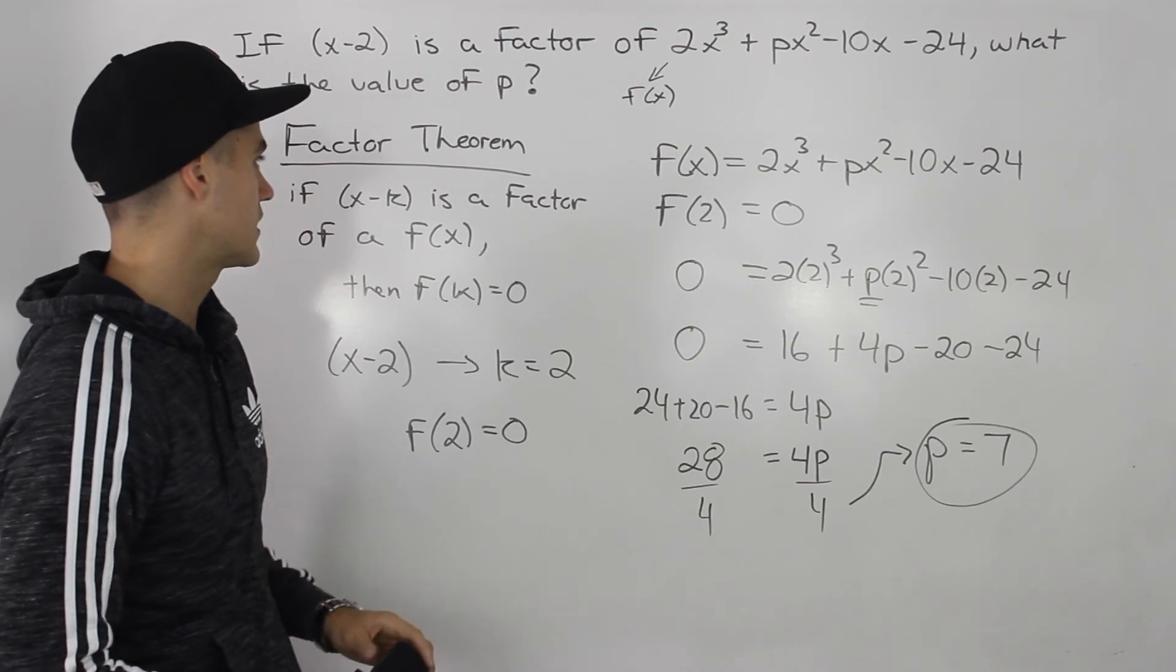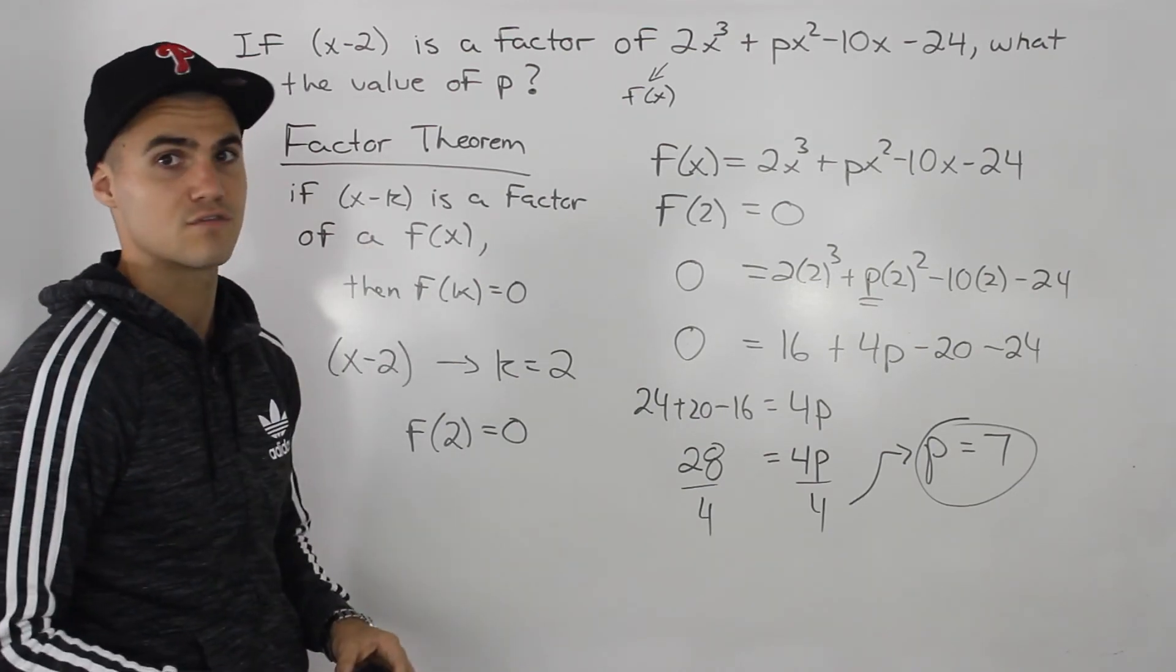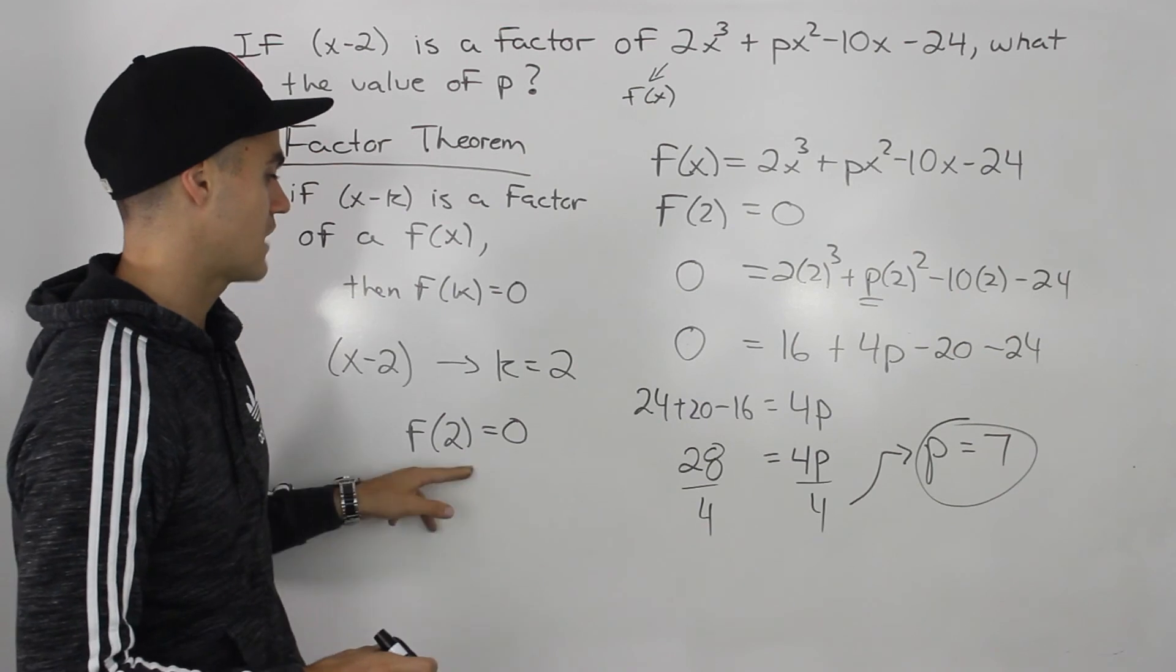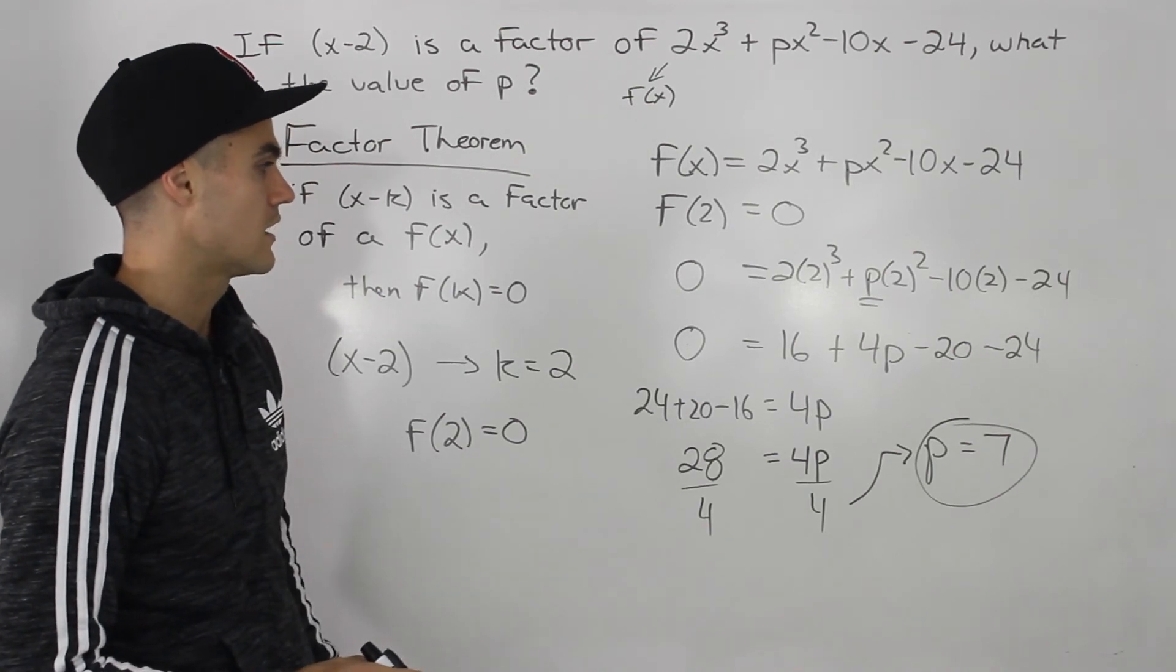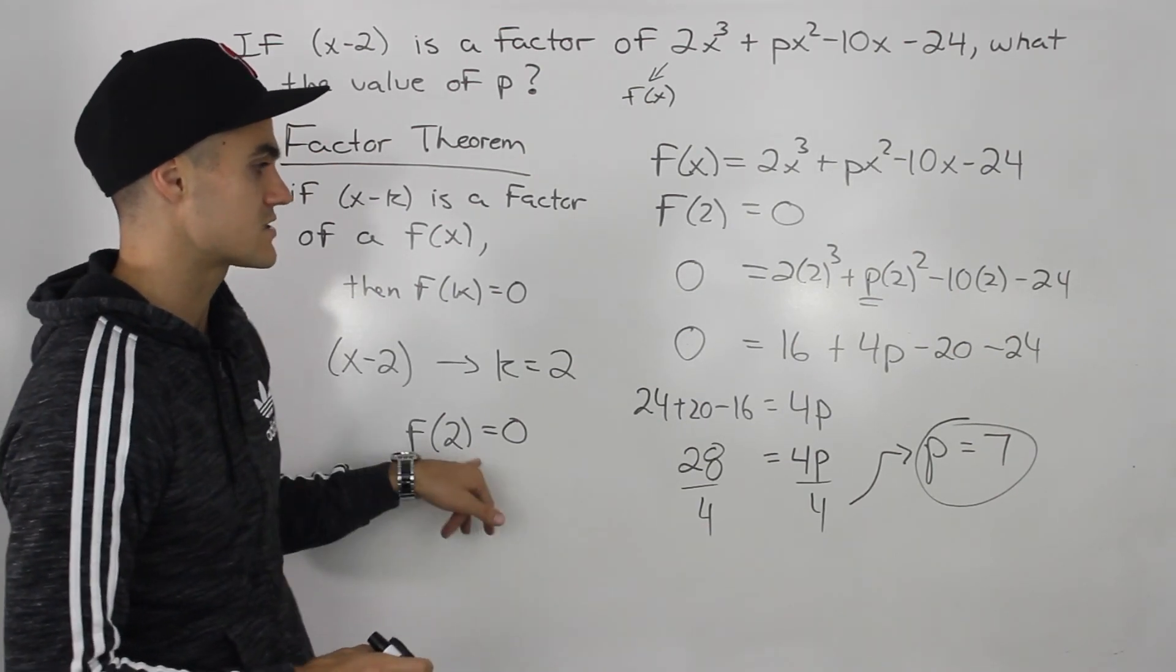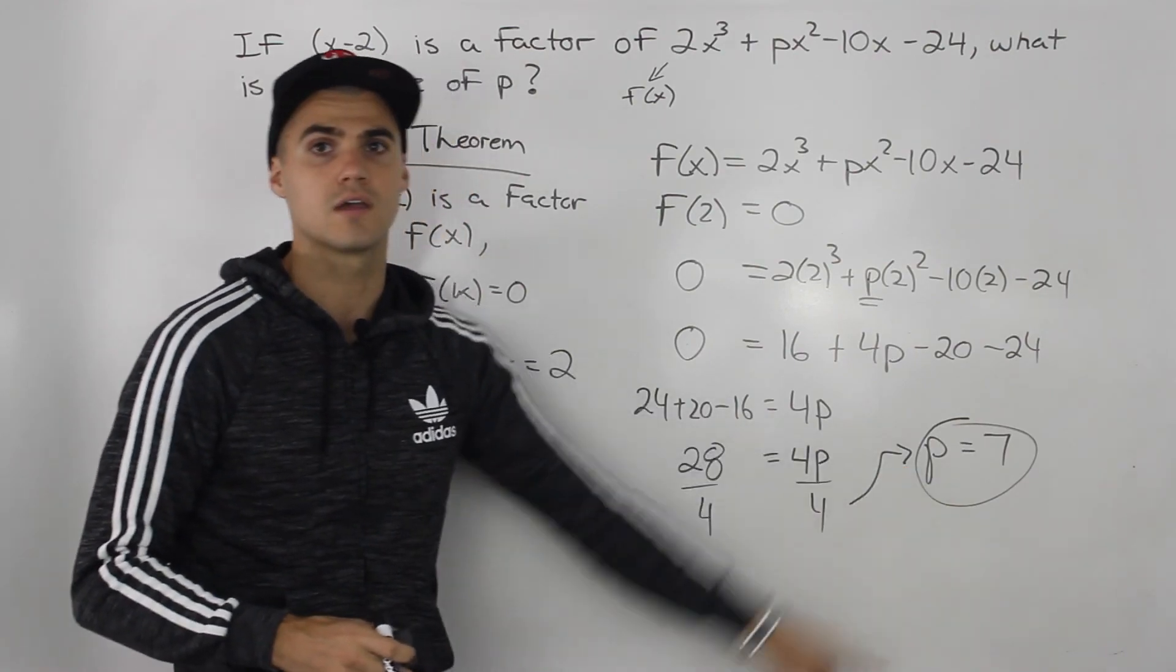And you should, because x minus 2 is a factor. So according to the factor theorem, f of 2 should equal 0. And it does so when that p value is 7.